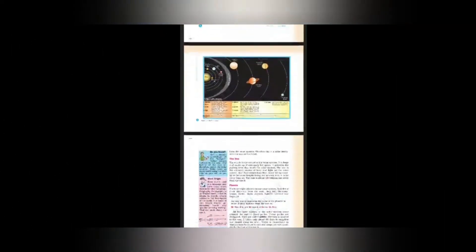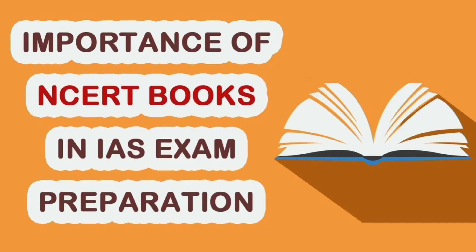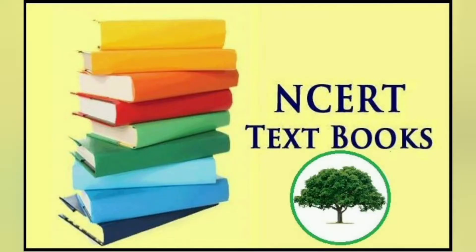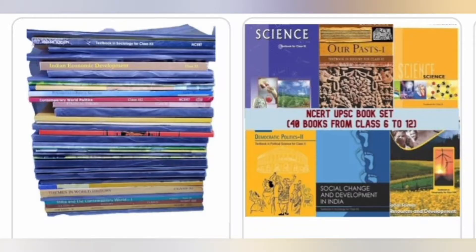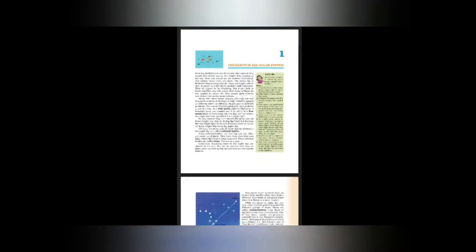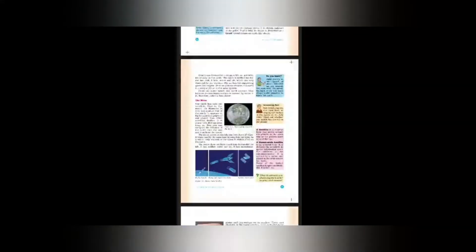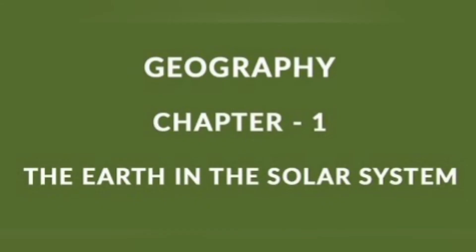You all know about how NCRTs from 6 to 12 standard are necessary for UPSC preparation. As per subject wise, I will make each lesson on NCRTs from 6 to 12 standard in the form of PARS and POST in this Green UPSC channel. Today's session is on NCRT Class 6 Geography Chapter No. 1, The Earth in the Solar System.